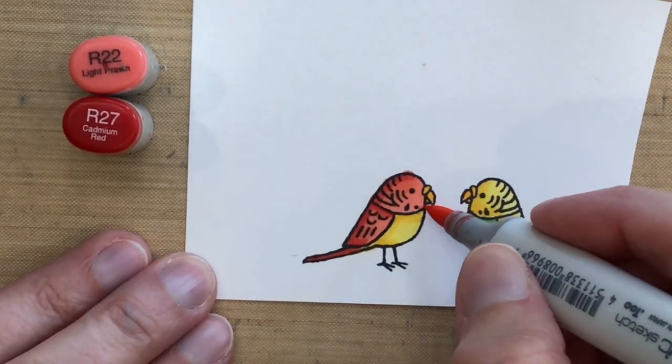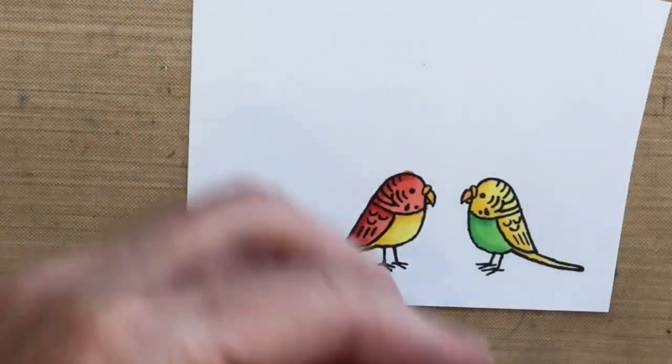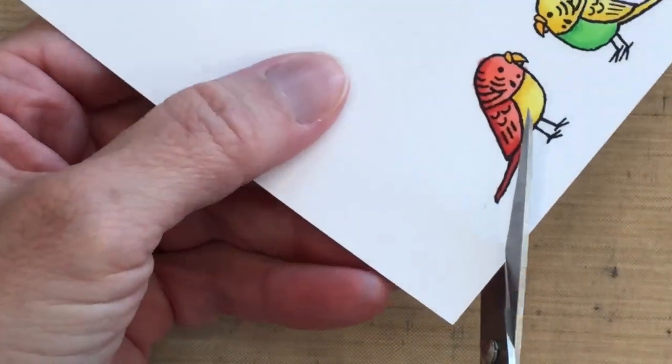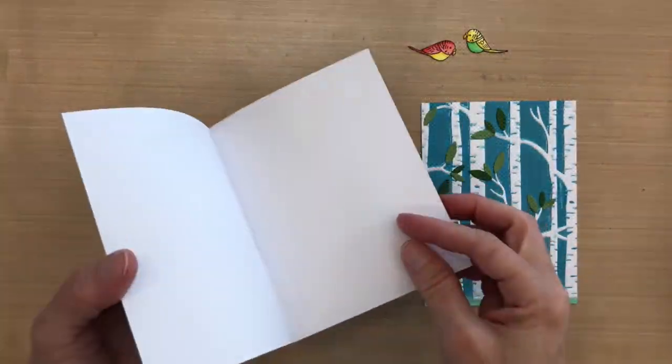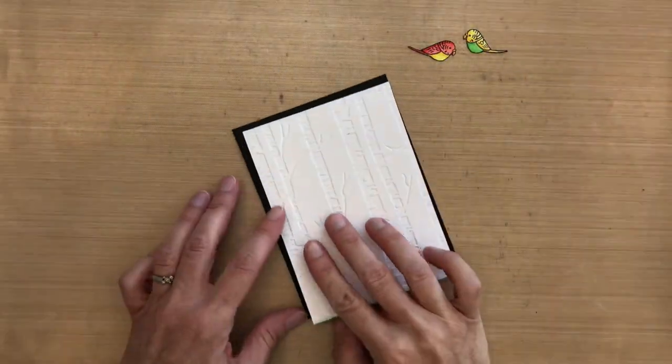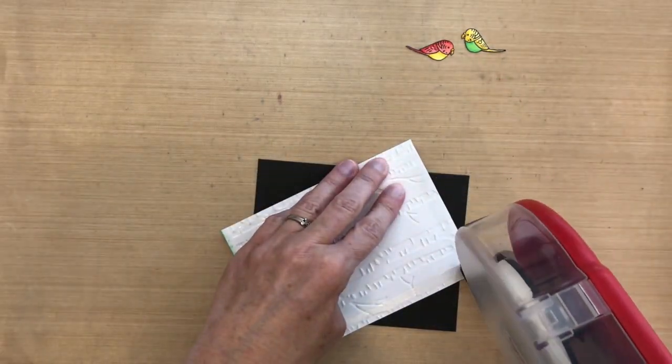I don't have the dies, so I'm going to cut these out with a scissor. I'm going to chop off their feet. You can see I have cut off their feet and I'm going to add them back later. I'm going to adhere my panel to a Hero Arts black note card with some ATG tape runner.